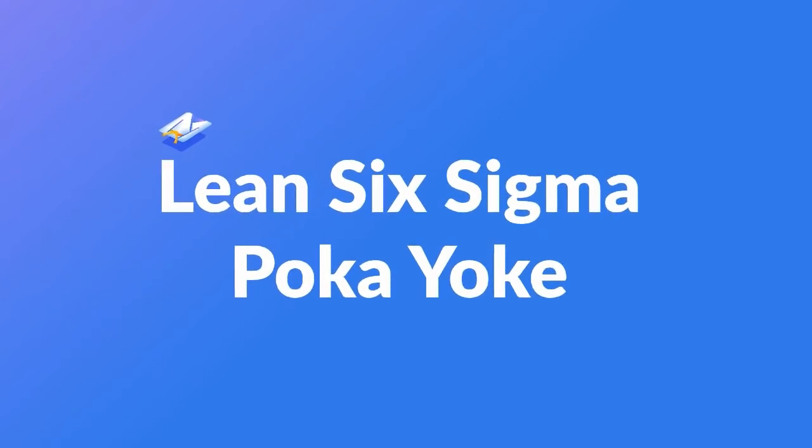Hello, we're here to talk about another Lean Six Sigma methodology: Poka-yoke. This is a Japanese term that means mistake-proofing. It's any mechanism in a process that helps to avoid mistakes. Let's take a look at a few mistake-proofing strategies that might be familiar.